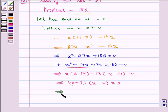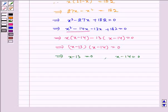Which implies x minus 13 is equal to 0 and x minus 14 is equal to 0, which implies x is equal to 13 and x is equal to 14.